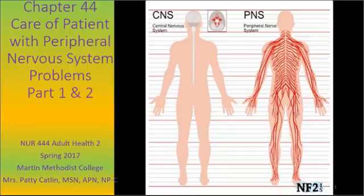The topics include Guillain-Barré, Myasthenia Gravis, and peripheral nerve disorders or trauma — and that's the section that this chapter covers.